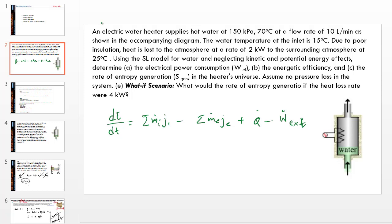In this problem, we want to analyze an electric water heater that heats up water in a steady flow, steady state manner from state one to state two while consuming electricity. We have to find the electrical power consumption and the energetic efficiency of this device.